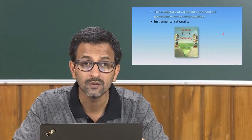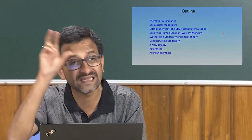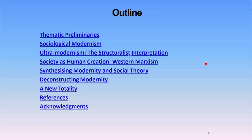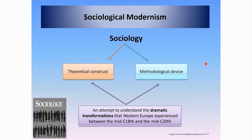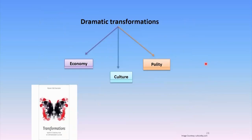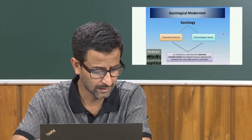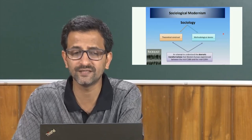We have covered the thematic preliminaries in this course. Now, looking at the broader outline sketched at the beginning of the course, we will discuss sociological modernism — the classic statements of sociological modernism. When I say classic statements of sociological modernism, I mean it is through the works of Marx and Weber, before delving into the way their works have contributed immensely to the debates in modernity.